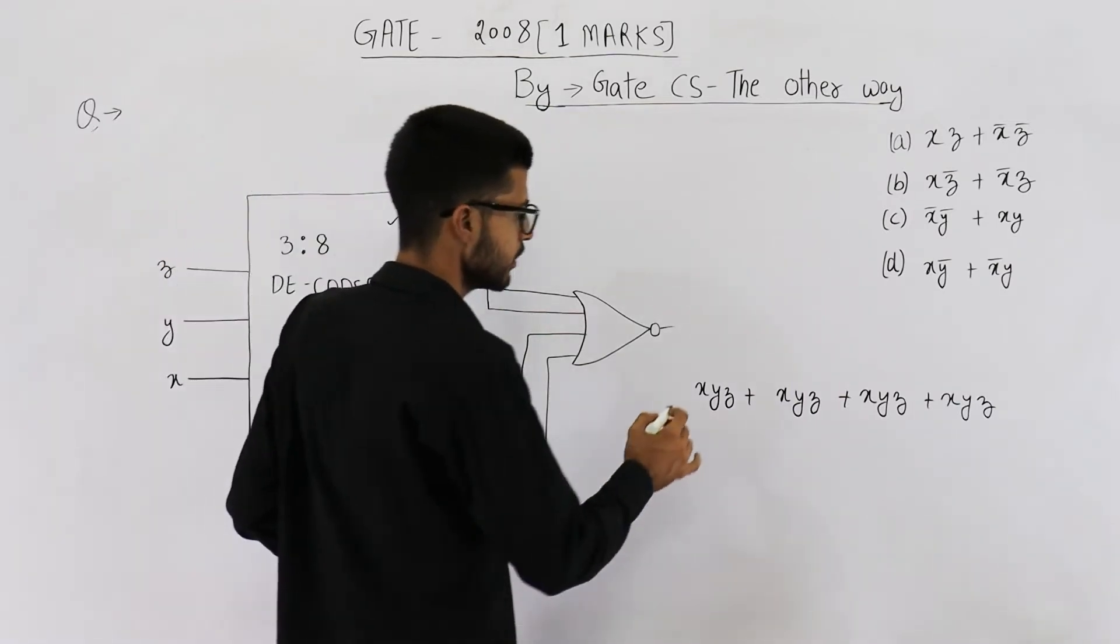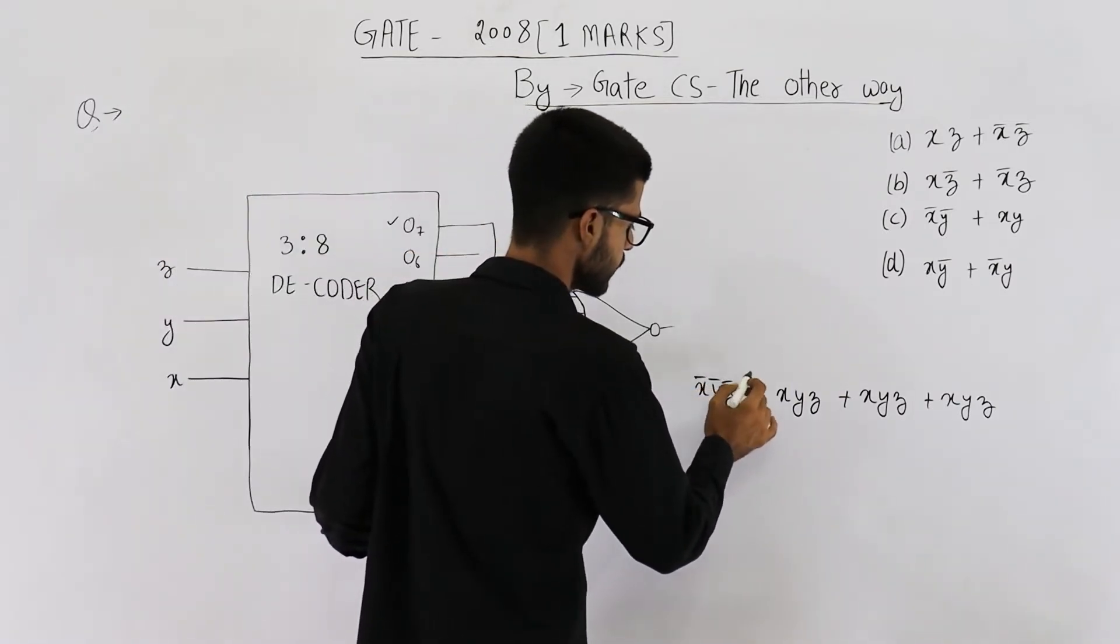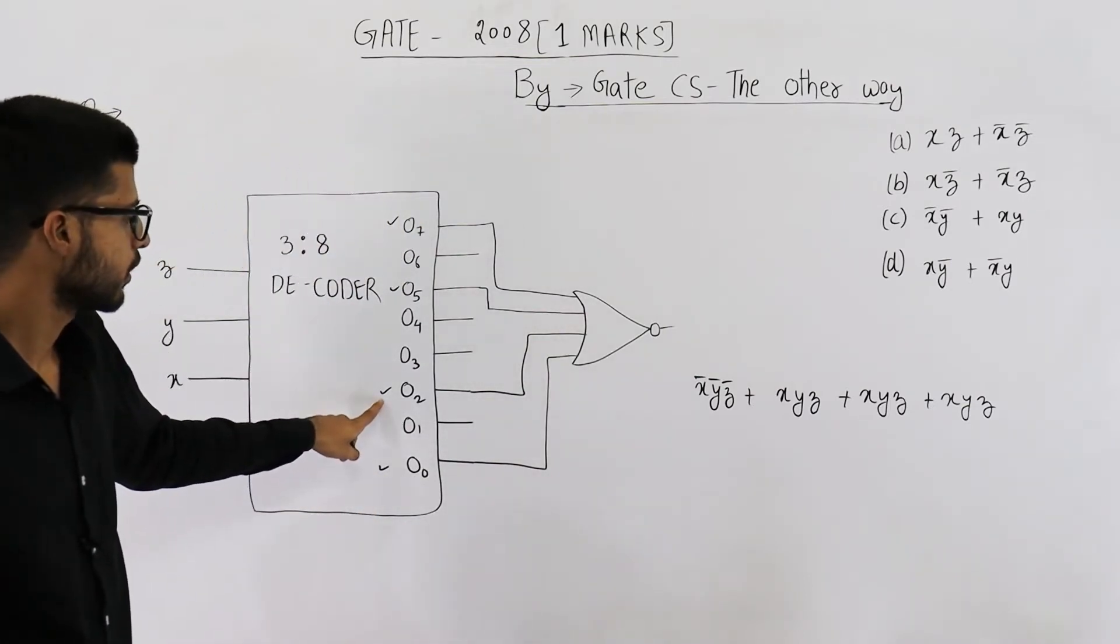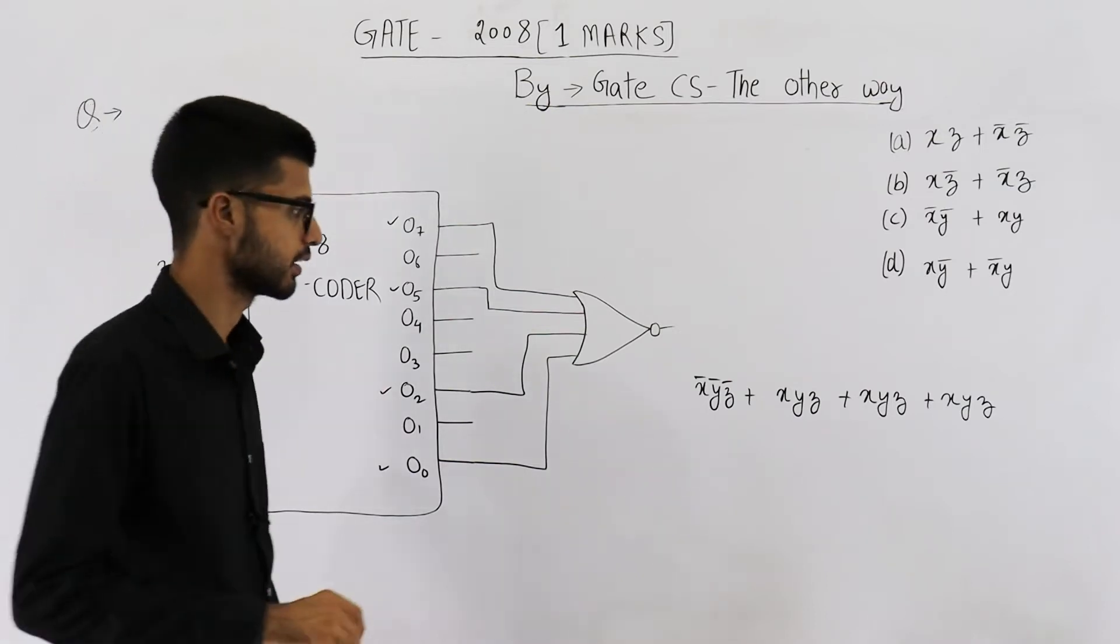O0 will be high when values of x, y, z are all three low. O2 will be on when values of x, y, z are 0, 1, 0.